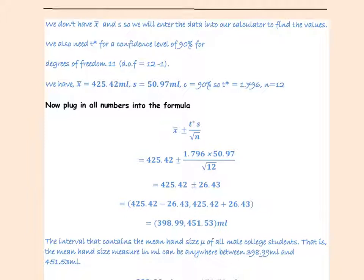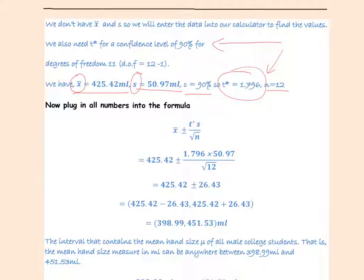We look for t*. The degrees of freedom is one less than the sample size, so it is 11. For a 90% confidence level with degrees of freedom 11, t* = 1.796 — this number comes from Table C. x̄ and s, the mean and standard deviation of the sample, come from the calculator. Make sure you know how to use the calculator to find the sample standard deviation s and sample mean x̄.